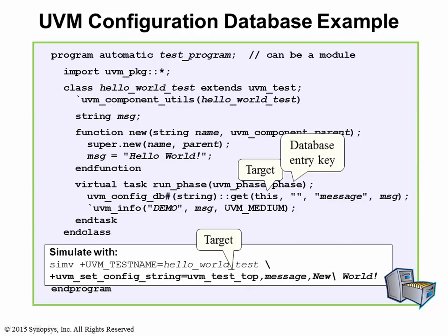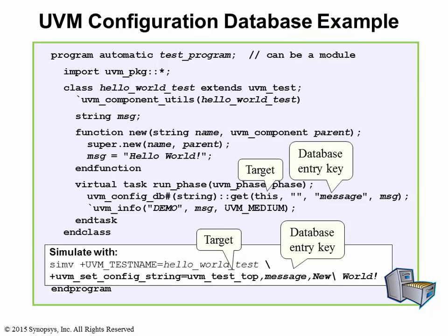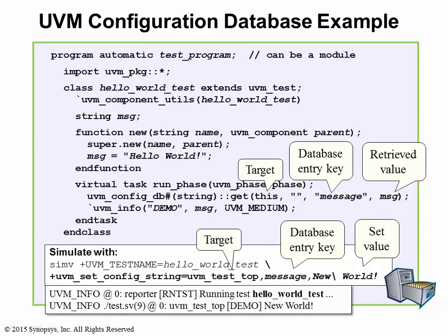The second argument is the entry key to the database — it must match the third argument of the get method. The retrieval from the database is based on this entry key. The last argument of the runtime switch is the value that you want to store in the database. The value stored in the database will be retrieved by the get method if the target and the entry key match, and the result shows up in the simulation display.